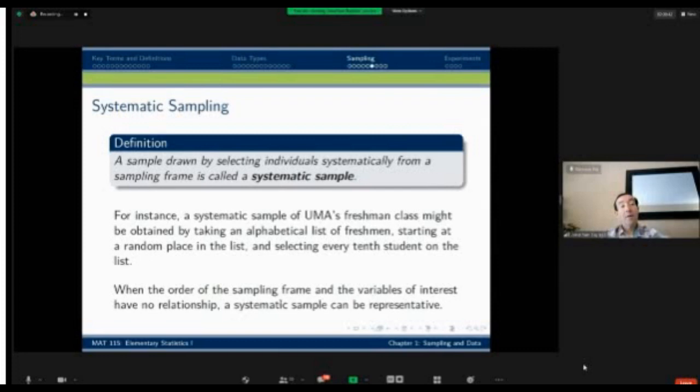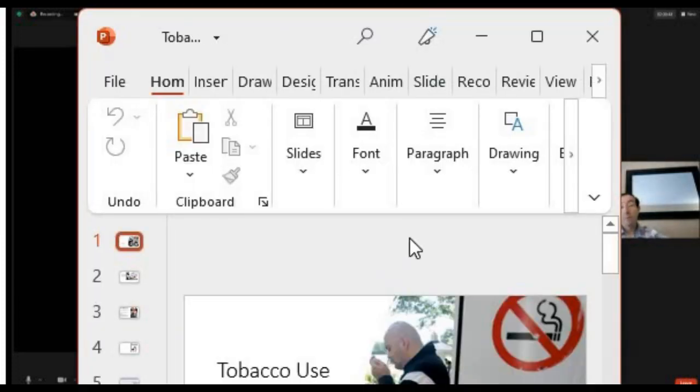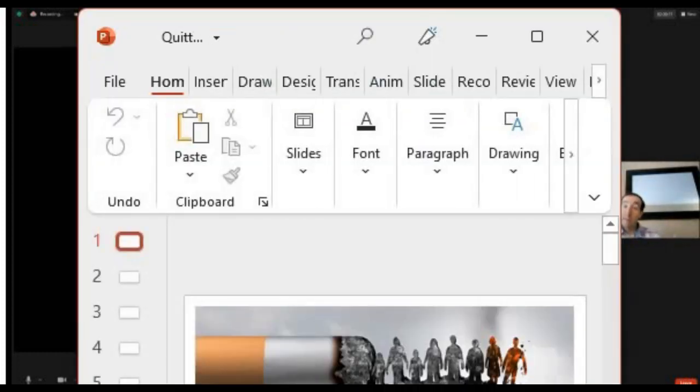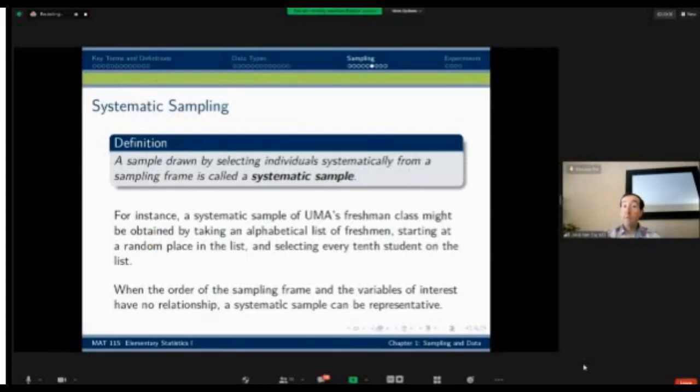That is called systematic sample because there's a systematic rule for deciding who's in the sample and who's not based on the sampling frame. That is also a reasonable source of randomization as long as the order in your sampling frame doesn't have any impact on the thing you're trying to measure. For instance, if I am trying to measure the average GPA among students at UMA, I could do that by a sample frame involving all the students and I could use a systematic sample. That would be a reasonable way as long as alphabetical order has no impact on GPA.